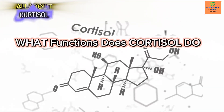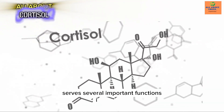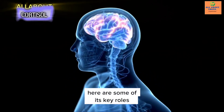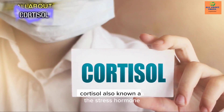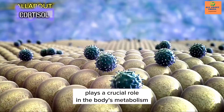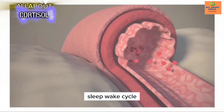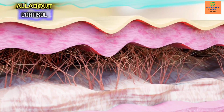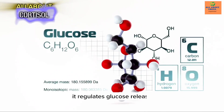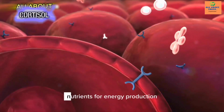What functions does cortisol serve? Cortisol plays a crucial role in the body's metabolism, immune function, stress response, sleep-wake cycle, blood pressure regulation, anti-inflammatory effects, and mood and emotion regulation. It regulates glucose release and blood sugar levels, and promotes the breakdown of stored nutrients for energy production.